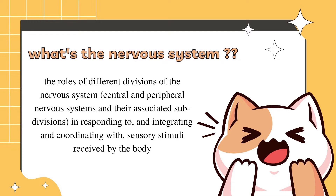Hello and welcome to VCE Psychology. Today we'll be learning about the nervous system. The first stop point on the study design is the roles of different divisions of the nervous system, including the central and peripheral nervous systems and their associated subdivisions, in responding to and integrating and coordinating with sensory stimuli received by the body.